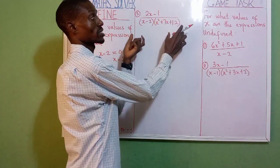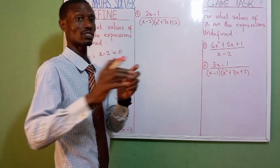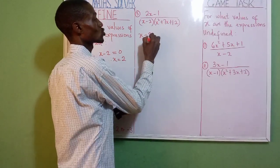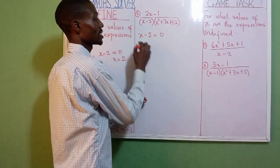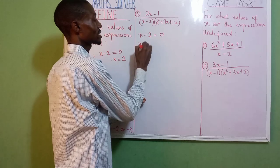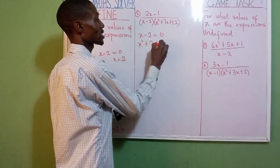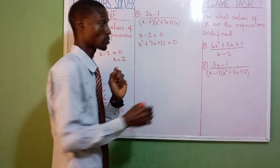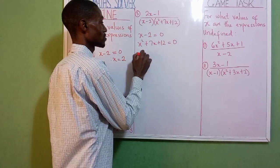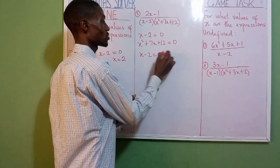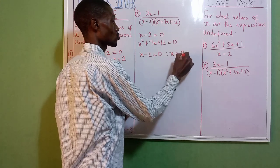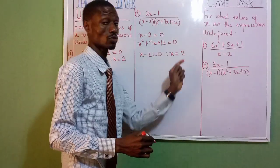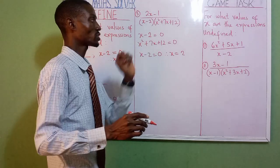For the last one, we have two brackets: the first one is x minus two equals zero, and the second is x squared plus seven x plus twelve equals zero. The first one is straightforward: x minus two equals zero, therefore x equals two — because the minus two becomes plus two when it comes out.